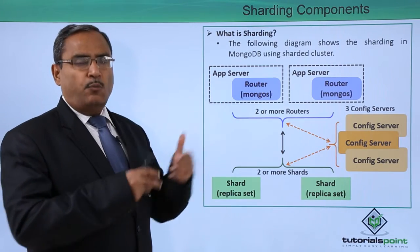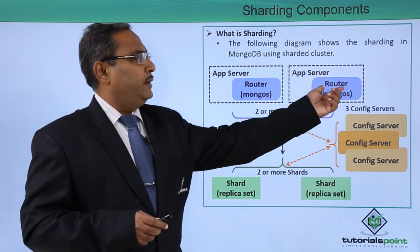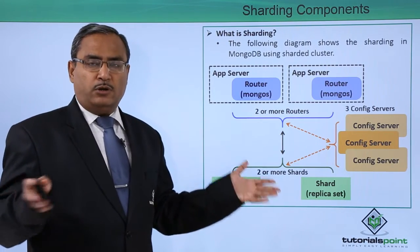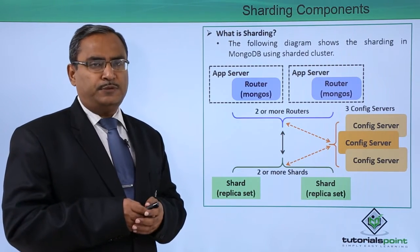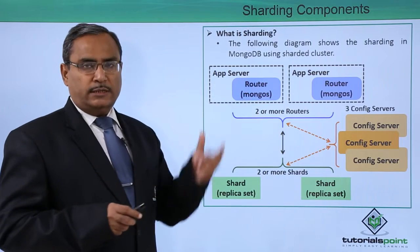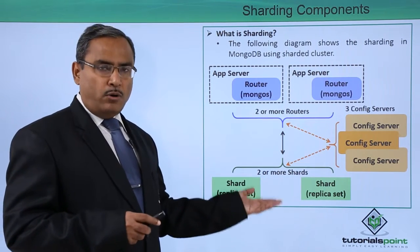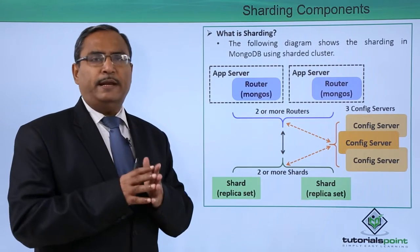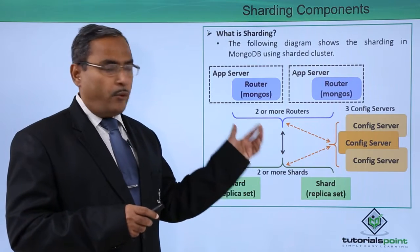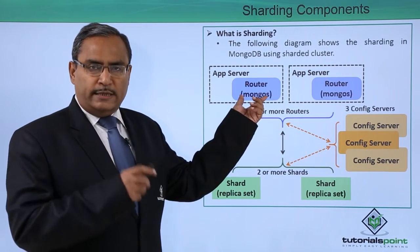This is the application server from where multiple applications are running and those applications are generating queries, and these are known as the query routers. We are having multiple such query routers — two or more. Why multiple query routers? Because when multiple applications are generating a huge number of queries at the same instance of time, to do the load sharing, we can have two or more query routers. These query routers are nothing but mongos instances — a client process.